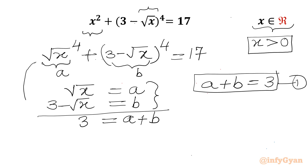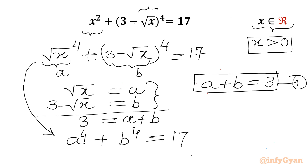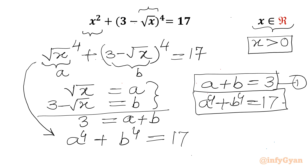After substitution, what we get from the original equation is a⁴ plus b⁴ equals 17. So our second equation is a⁴ plus b⁴ equals 17. Let's call this equation number 2.